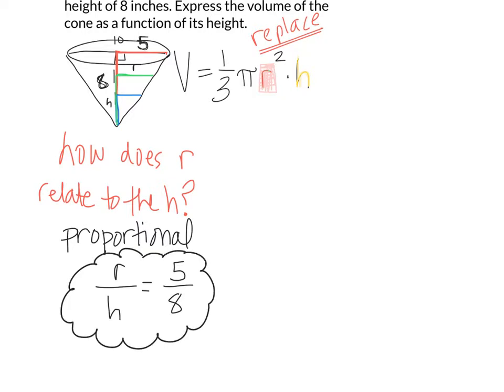We want to solve this for r. We multiply both sides by h. So r is 5h divided by 8. That is what we put into this equation instead of r.